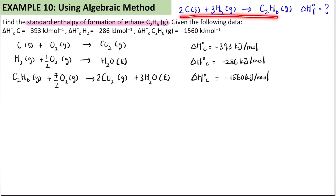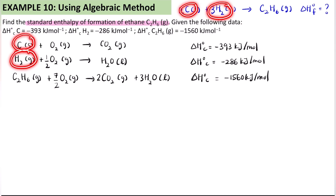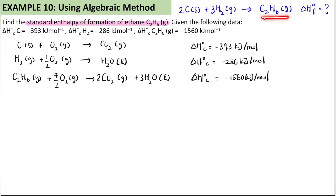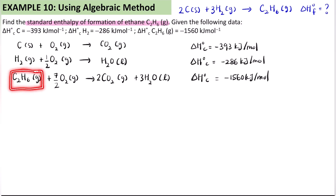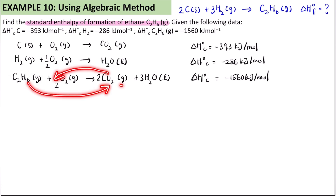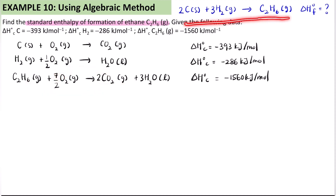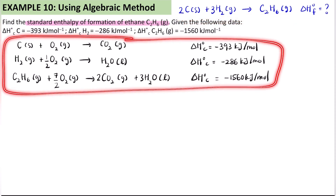Step 3: compare the newly written equations with the target equation. Looking at the target equation, carbon and hydrogen are on the reactant side in equations 1 and 2. But for equation 3, C₂H₆ is on the product side in the target equation, whereas here it is on the reactant side. So what we need to do is reverse equation 3 — all products go to reactants. We don't touch the target equation; the other equations must follow it.